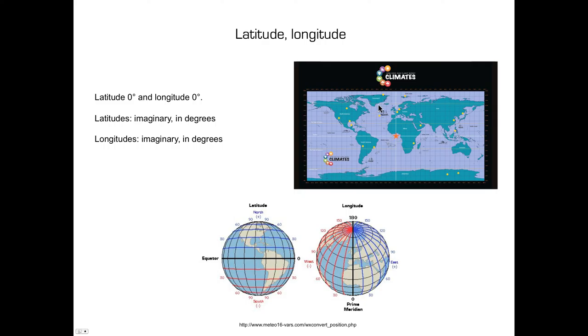Going to the north, the latitude increases from zero degrees to reach 90 degrees north at the North Pole. The same applies when going south. The latitude increases from zero degrees to 90 degrees south at the South Pole.